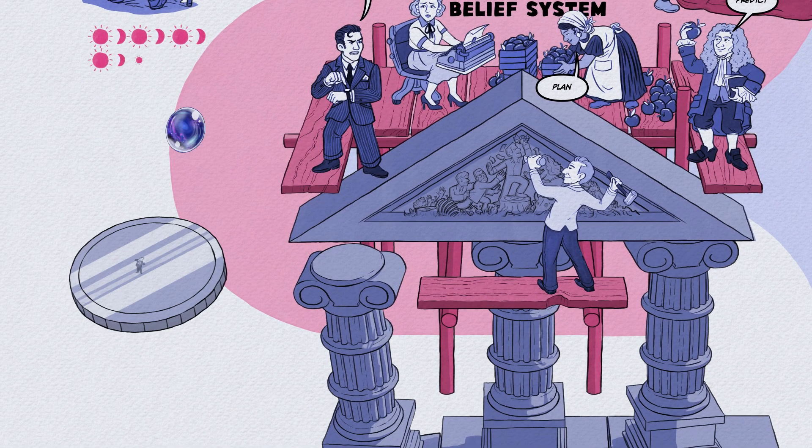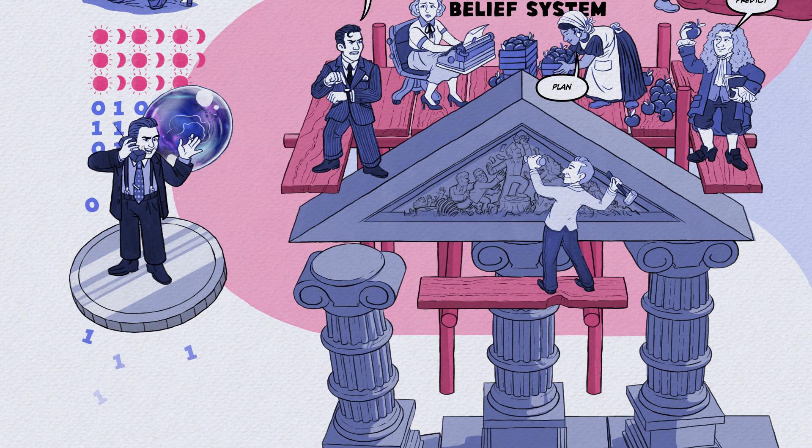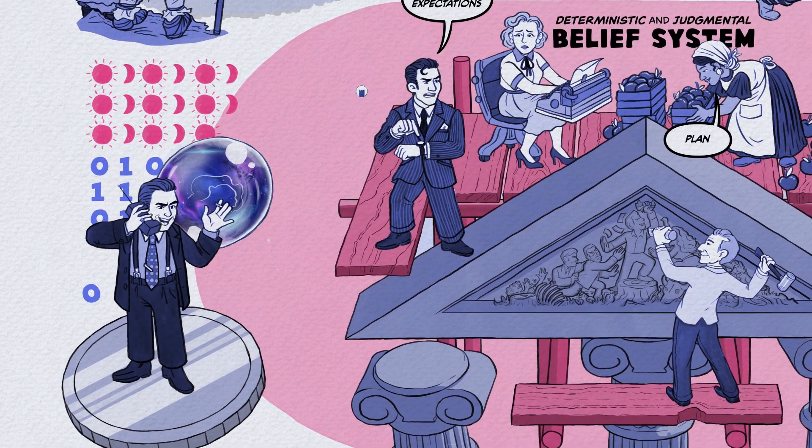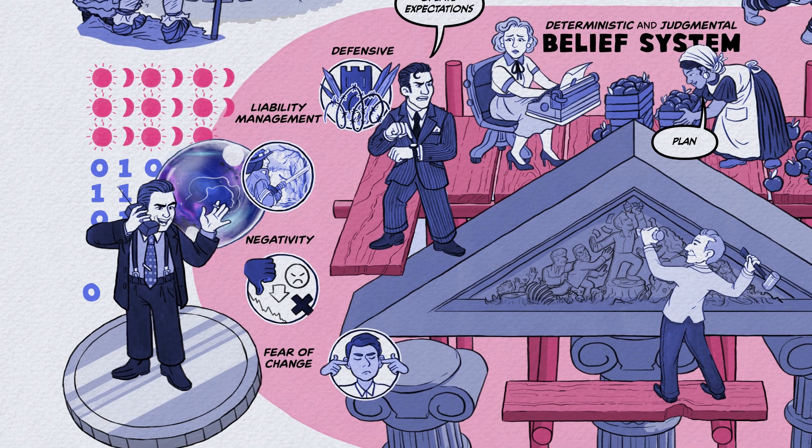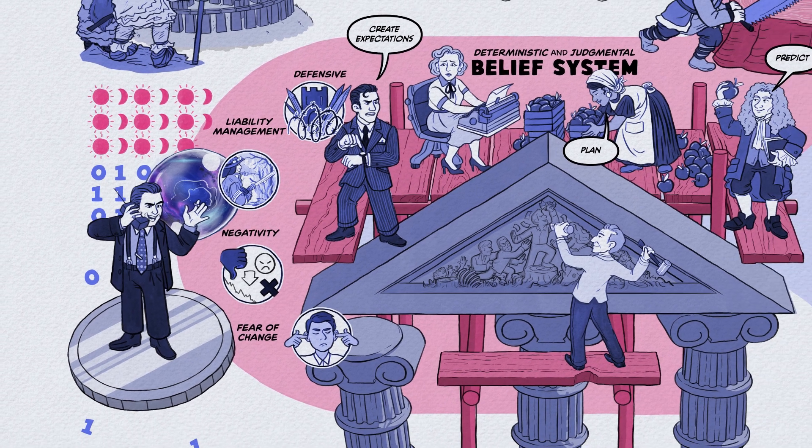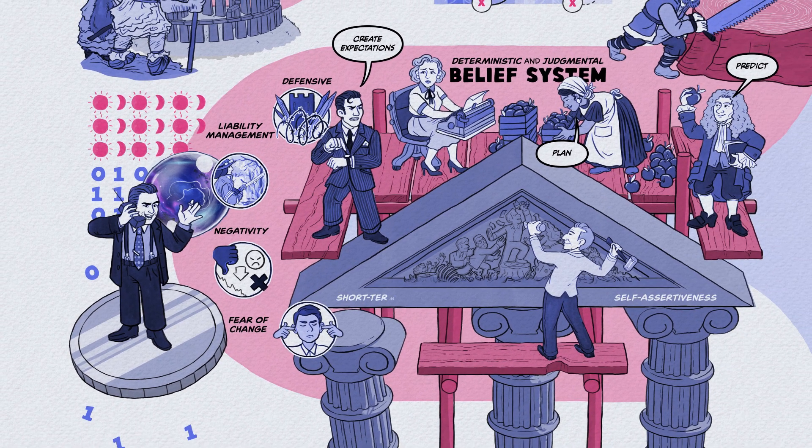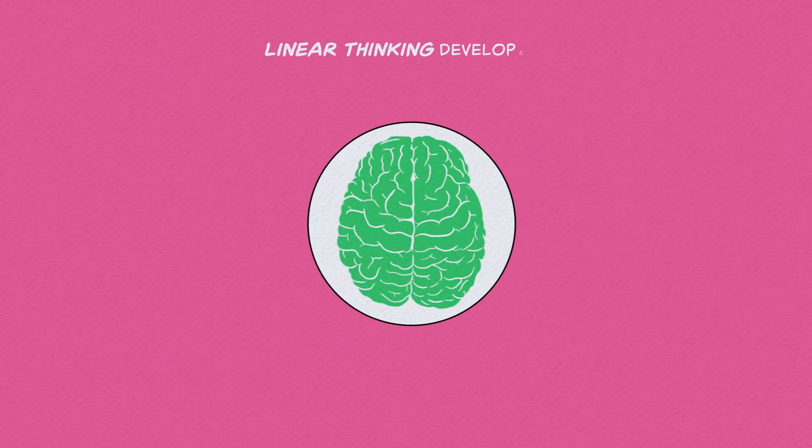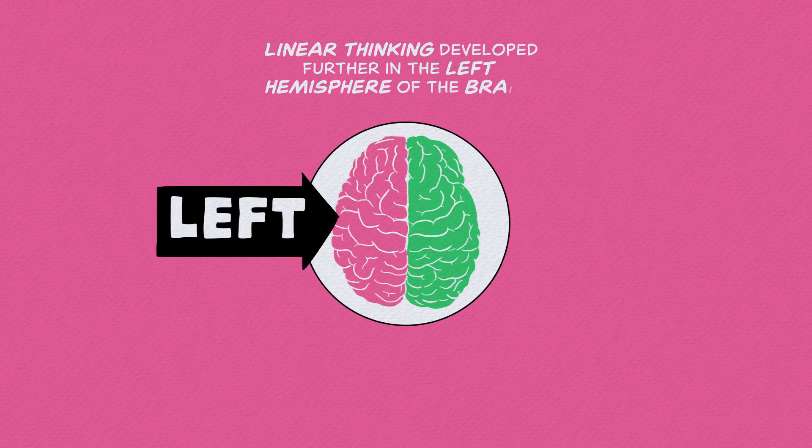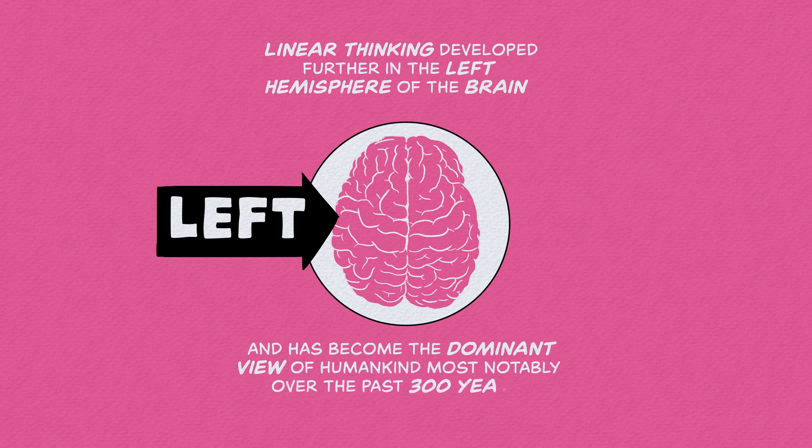To protect this illusory separated identity, the nature of this linear logic became defensive, leading to liability management, bias towards negativity, and fear of change. And we also established linear relationships based on self-assertiveness, short-term gain, domination, competition, and liability management. Linear thinking developed further in the left hemisphere of the brain and has become the dominant view of humankind, most notably over the past 300 years.